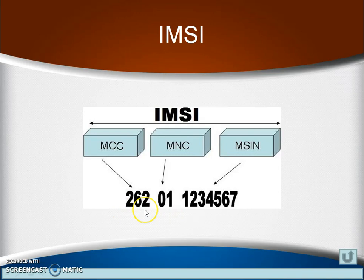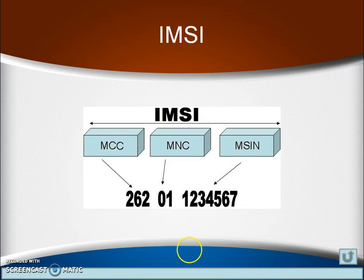404 is the country code for the GSM network for India, and 22 is the mobile network code for IDEA in Maharashtra. Similarly, if Tata Cellular is providing service in Maharashtra, their code will be 40407, where 404 is the country code for India and 07 is the mobile network code.